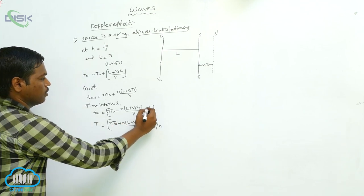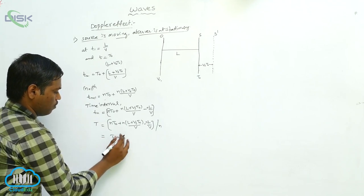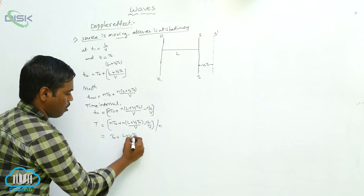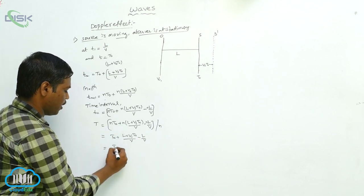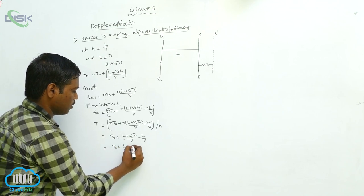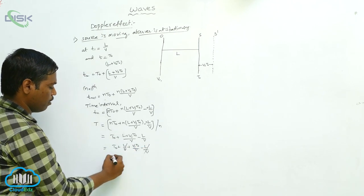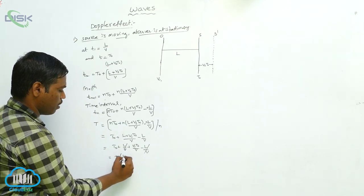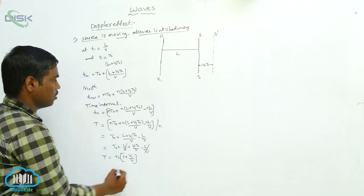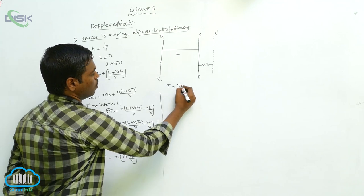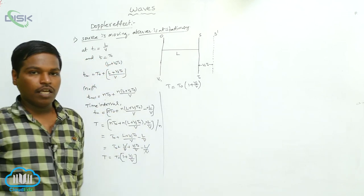After cancellation, we get T equals T0 plus (L plus Vs·T0) divided by V, minus L divided by V. The L/V terms cancel, leaving T equals T0 times (1 plus Vs divided by V). Taking T0 as a common factor: T equals T0 into (1 plus Vs by V).